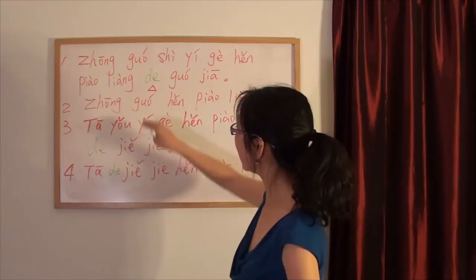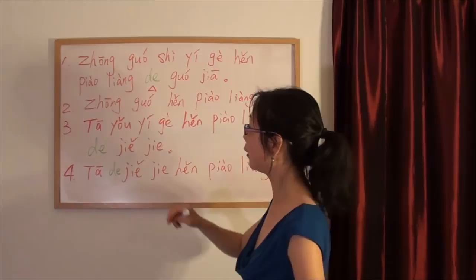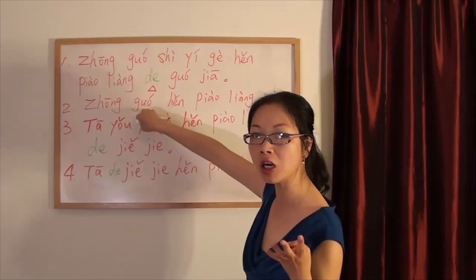Let's take a look at the other one in this group. 中国很漂亮. In this sentence, the sentence pattern is very easy. Subject, subject. Where's the verb?